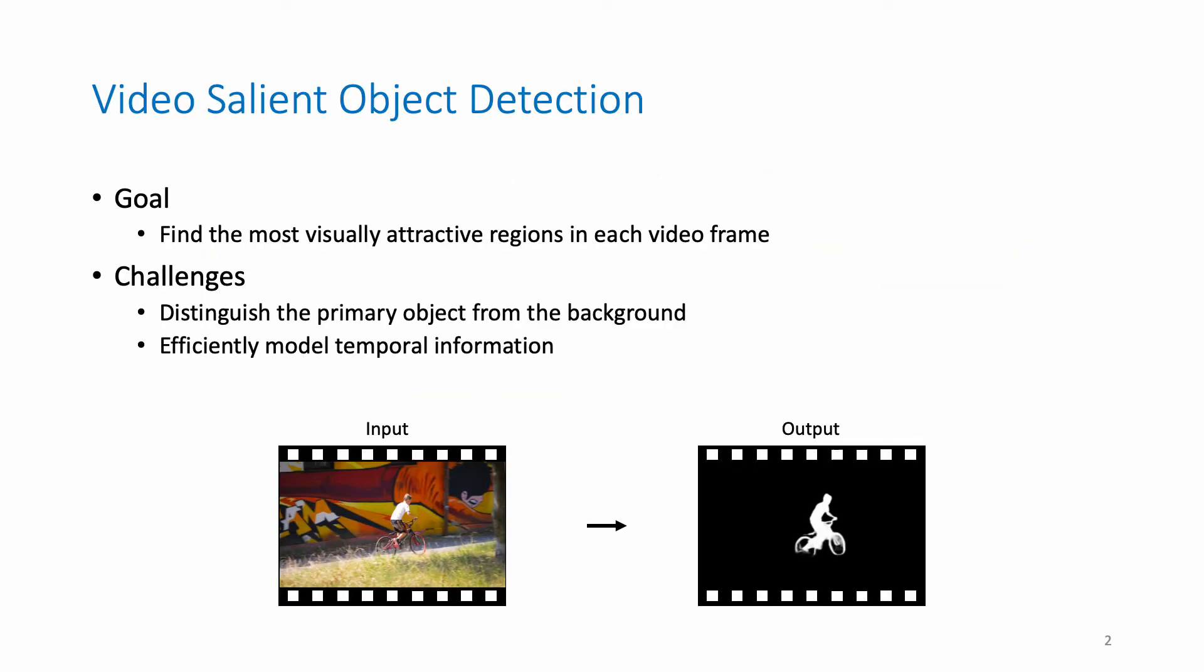The goal of Video Salient Object Detection is to find the most visually attractive regions in each frame of a video.